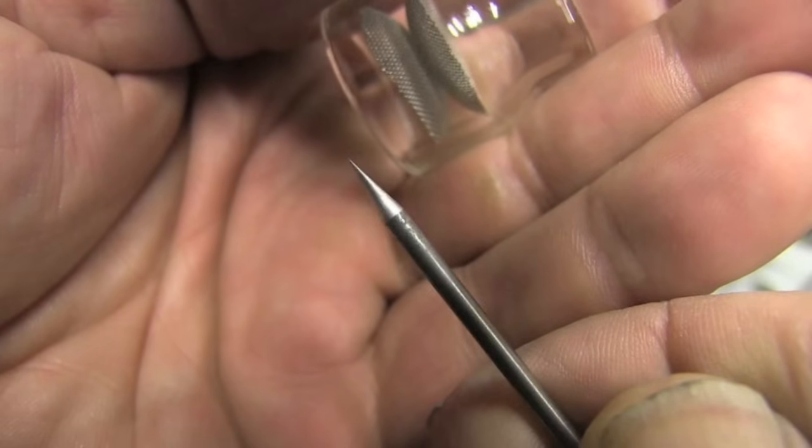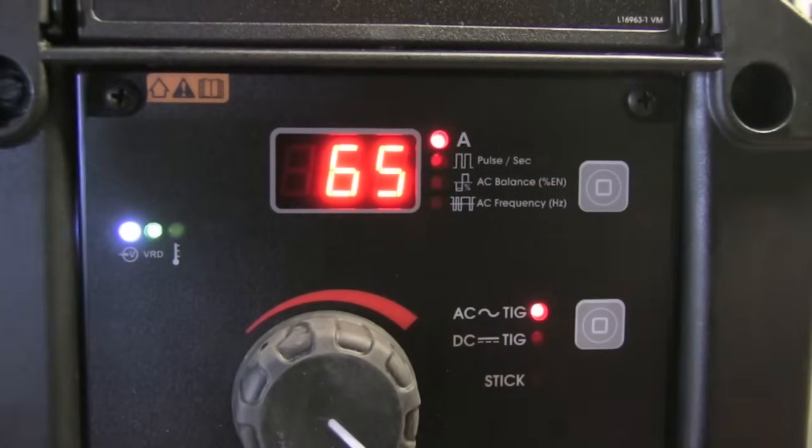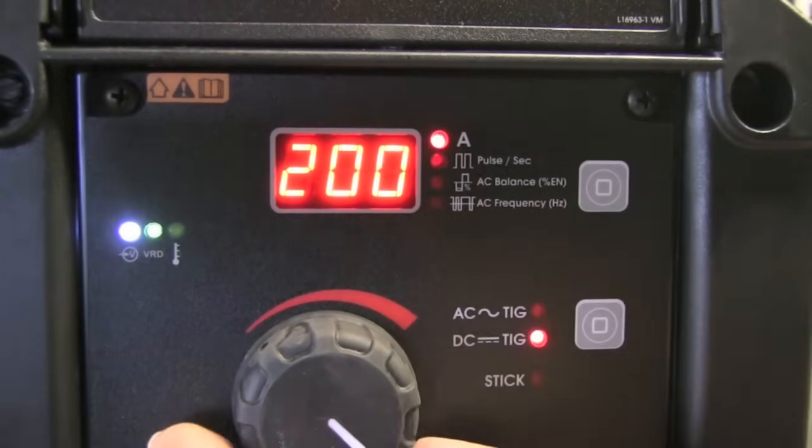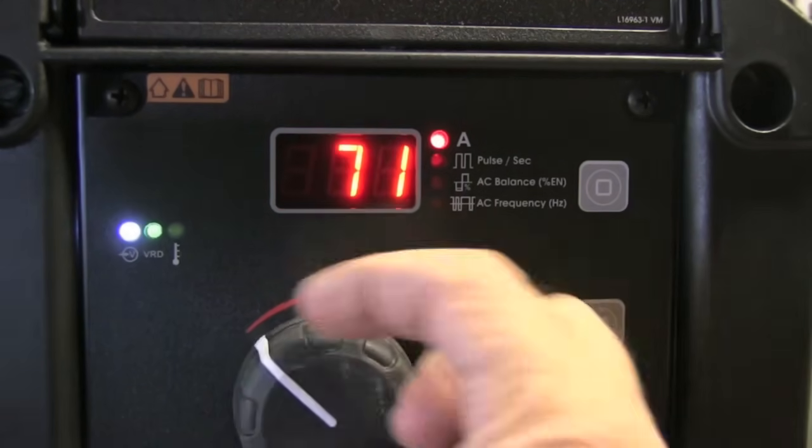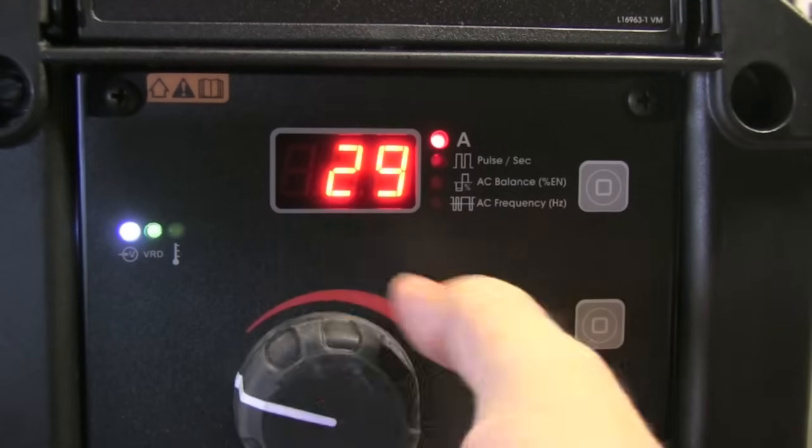I'm going to be using the real sharp electrode again with a furick cup—number 12 Pyrex cup—so I can get a long stick out so you can see what I'm doing. I don't put a flat tip on my electrodes for thin stuff like that. I just sharpen them and leave them sharp.